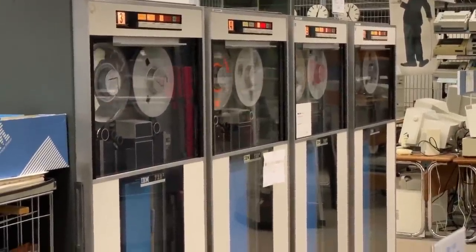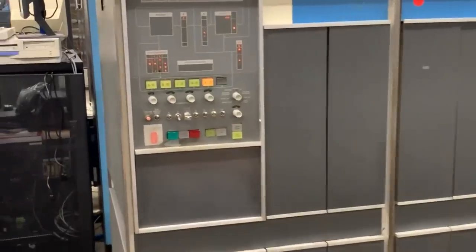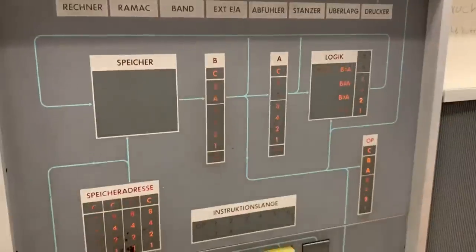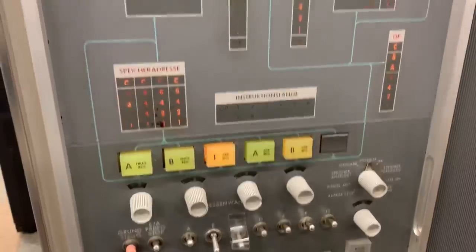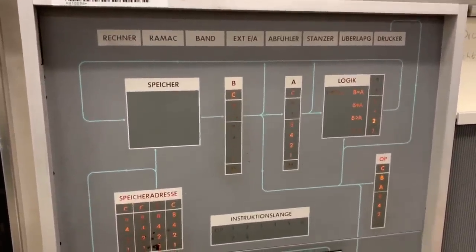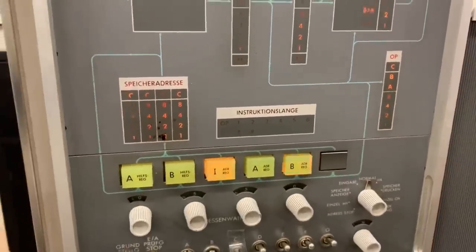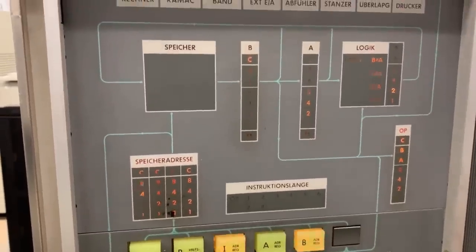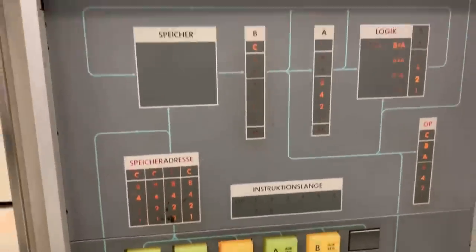You can see the tape drives of the IBM 1401 working. In a moment I'll show you the initial machine loading — IML — on one of these machines. To me, the IBM 1401 is the most beautiful mainframe. It has only two registers, register A and register B — it's a decimal arithmetic machine. There are emulators for the 1401 that can run the Fortran compilers and the Autocoder assembler from back then.